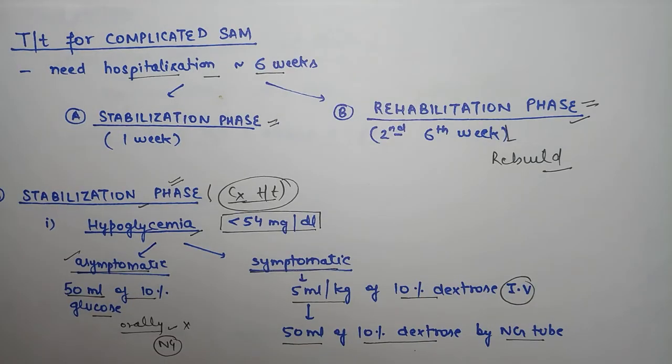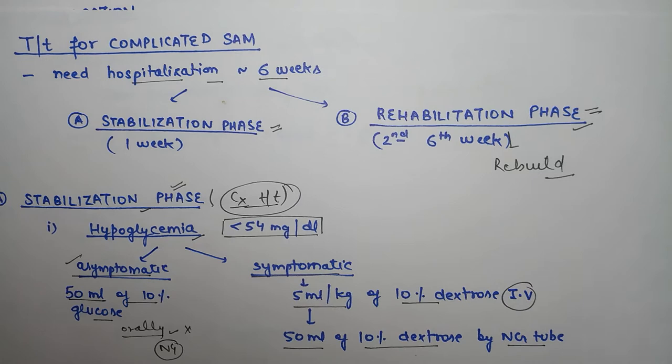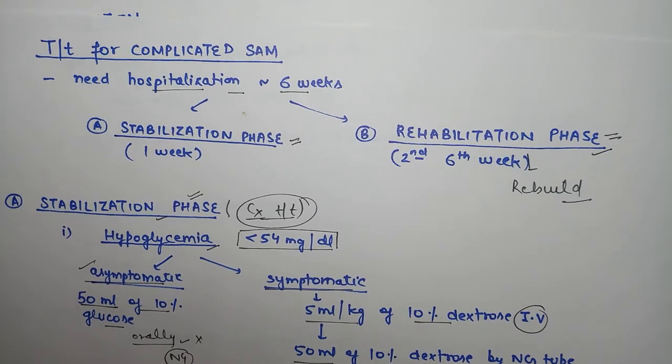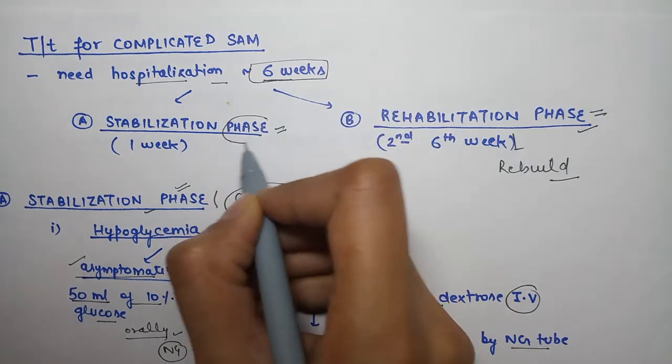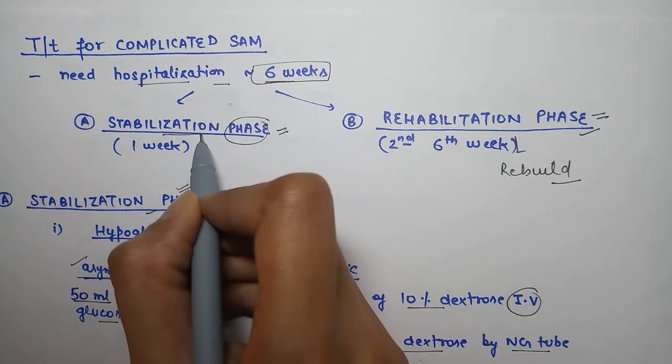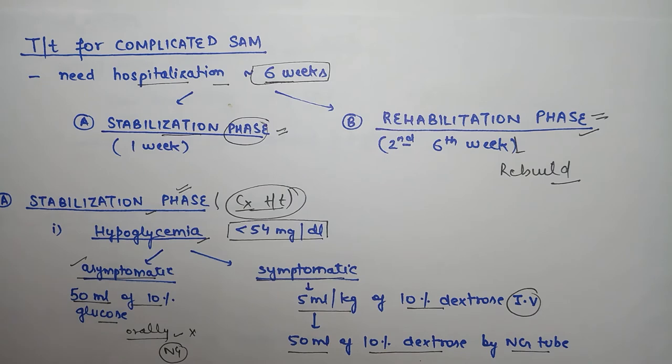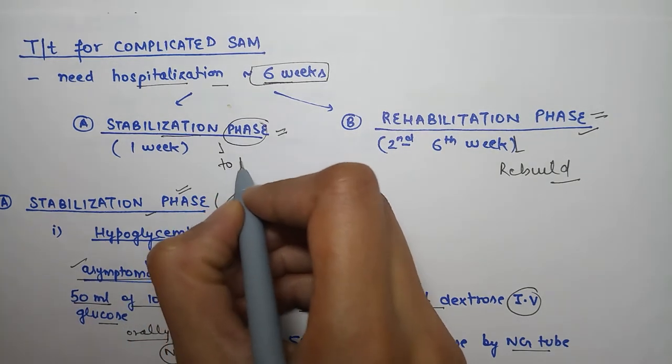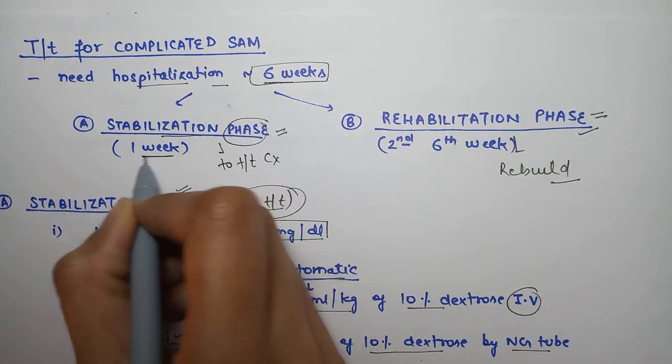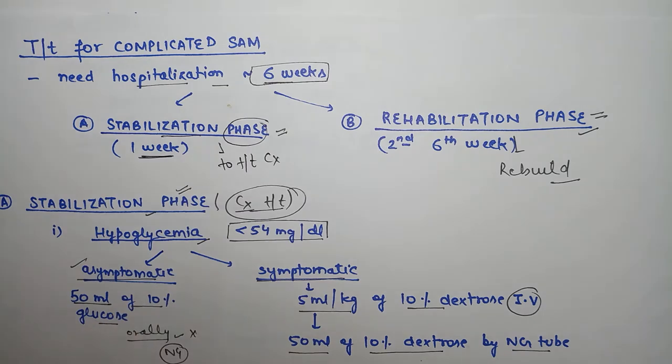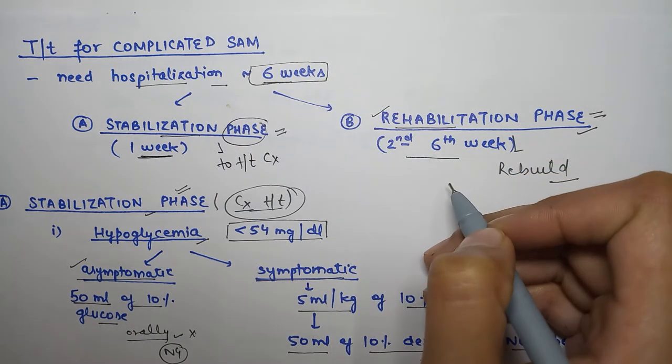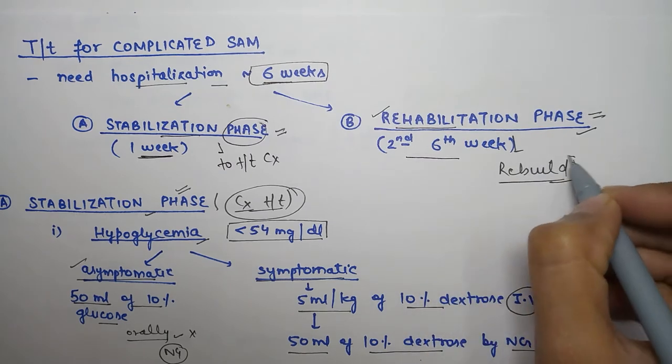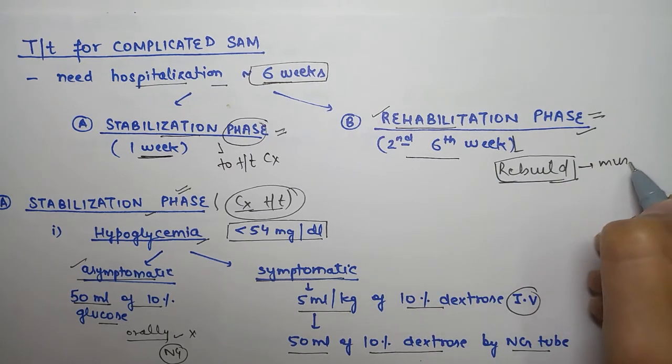Now for complicated SAM, we need hospitalization for around 6 weeks. Treatment is in two phases: stabilization phase, which is around 1 week where we treat complications, then rehabilitation phase for 2-6 weeks where we rebuild the child with muscle wasting.